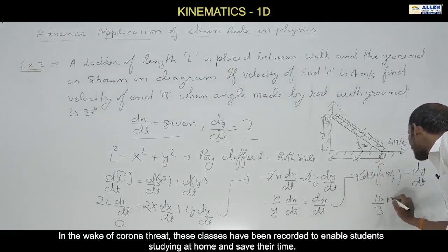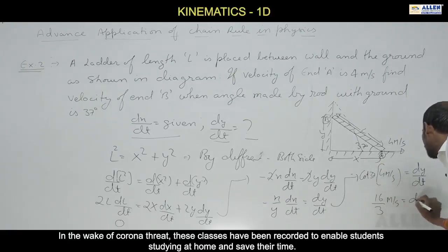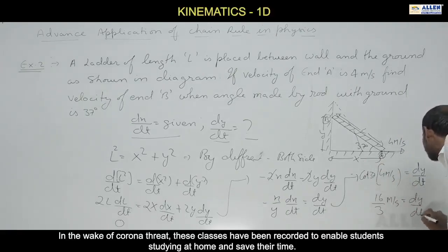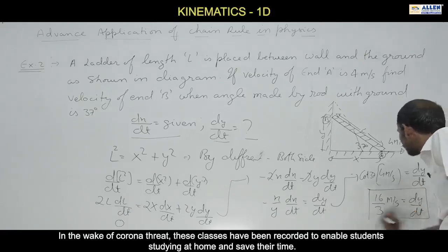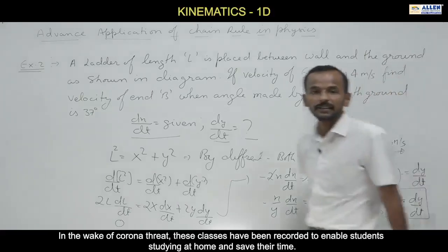Therefore the velocity of end B is −(4/3) × 4 = −16/3 meters per second. This is the answer. Clear.